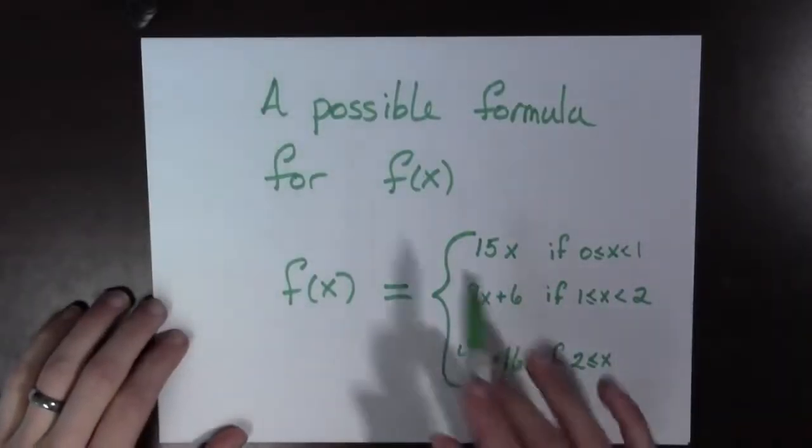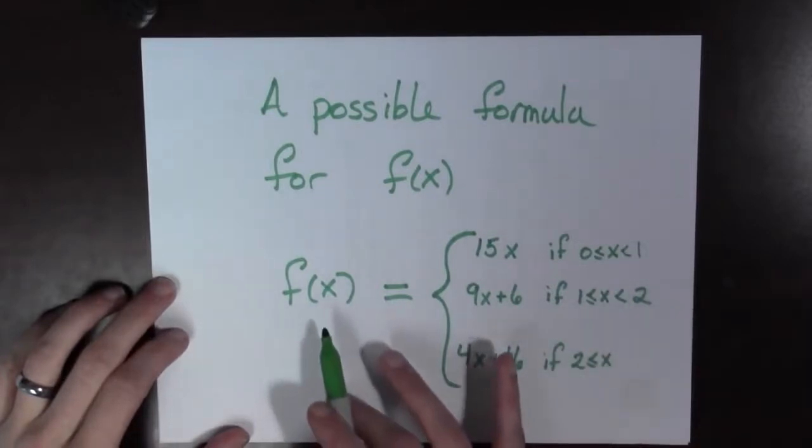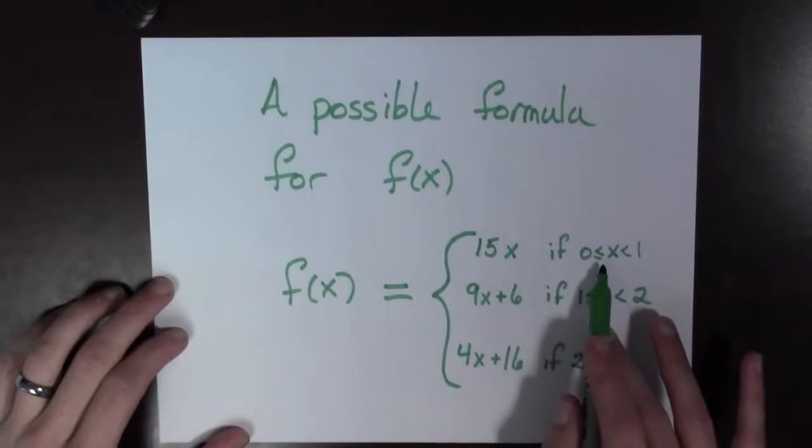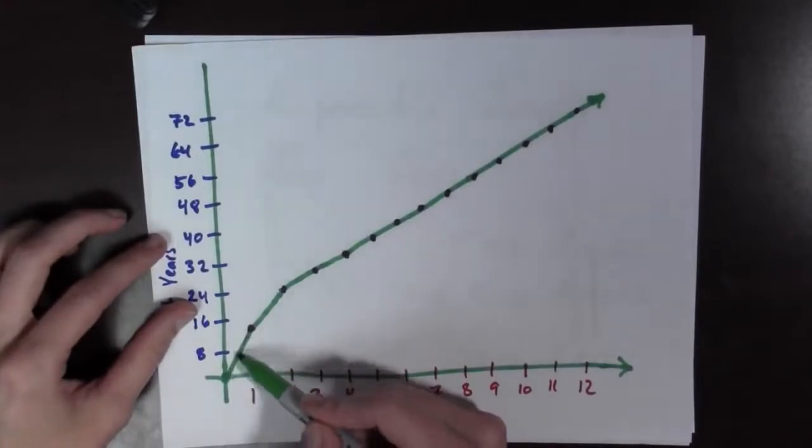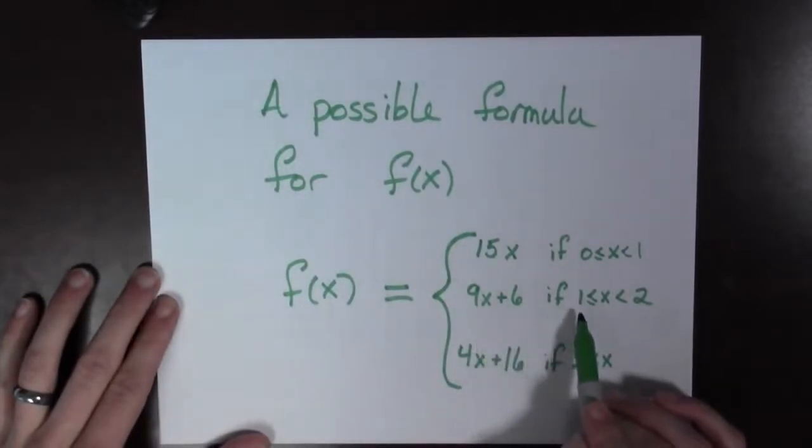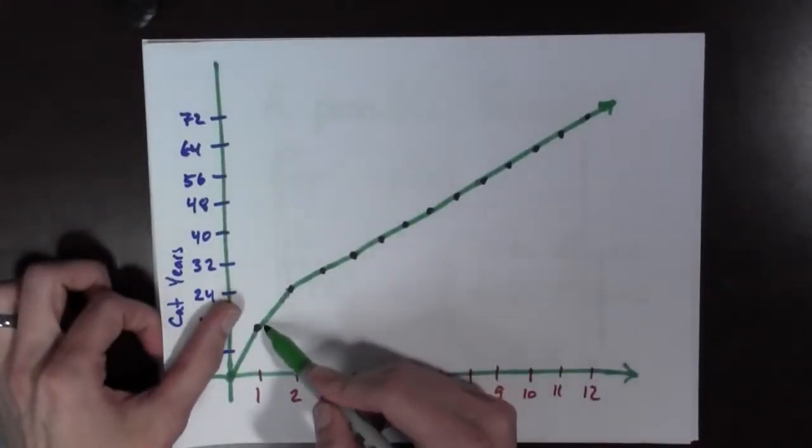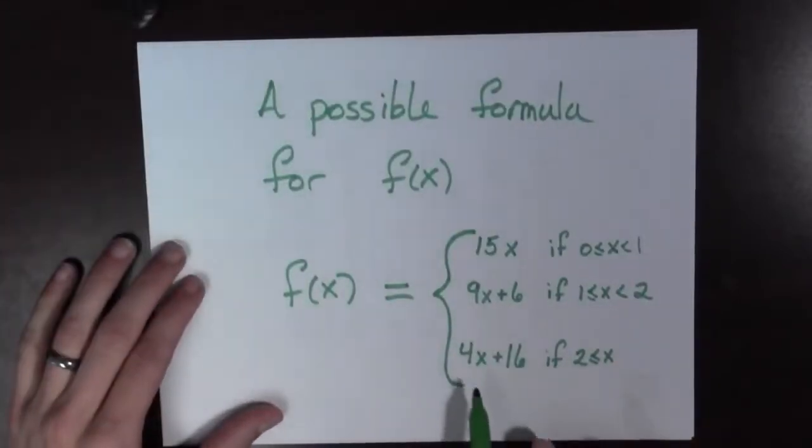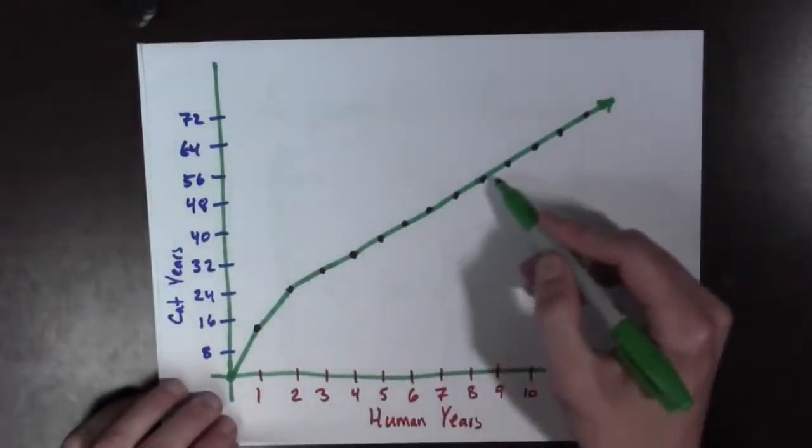And I have a formula for our table's values. Let's see this. So here we have a possible formula for f of x. And this is a little bit strange. f of x is a piecewise function. So f of x equals 15x if 0 is less than or equal to x is less than 1. And if we look at the plot, we can see this. Here it is. This is the 15x part right here. f of x equals 9x plus 6 if 1 is less than or equal to x is less than 2. And we can see this as well. Here we go. That's this part right here. And f of x equals 4x plus 16 if 2 is less than or equal to x. Alright. And that's this part of the graph.